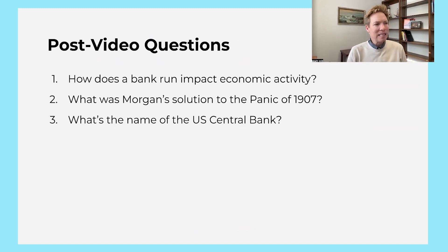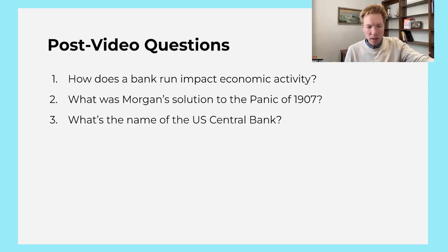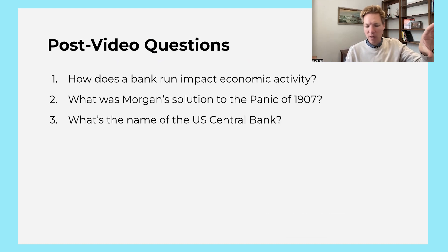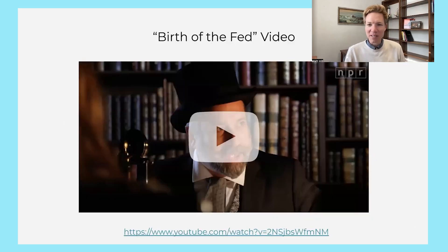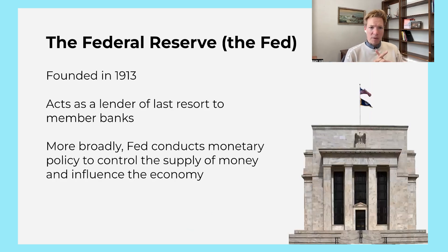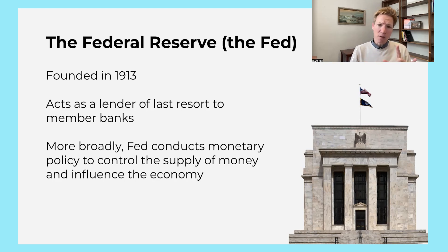Post-video questions, just to make sure students understand: How does a bank run impact economic activity? What's Morgan's solution? And what is the name of the U.S. central bank? You have detailed answers to these in the student activity sheets. Basically what we're doing in the video is segueing from — there's no central bank in this time period — and then we get a central bank. It seeds the idea of one of the main purposes of a central bank, why you would want a central bank. The answer is, well, maybe it's not such a good thing to have one guy who has to bail out the U.S. economy every time it gets in trouble. So then we get our central bank — the Federal Reserve.